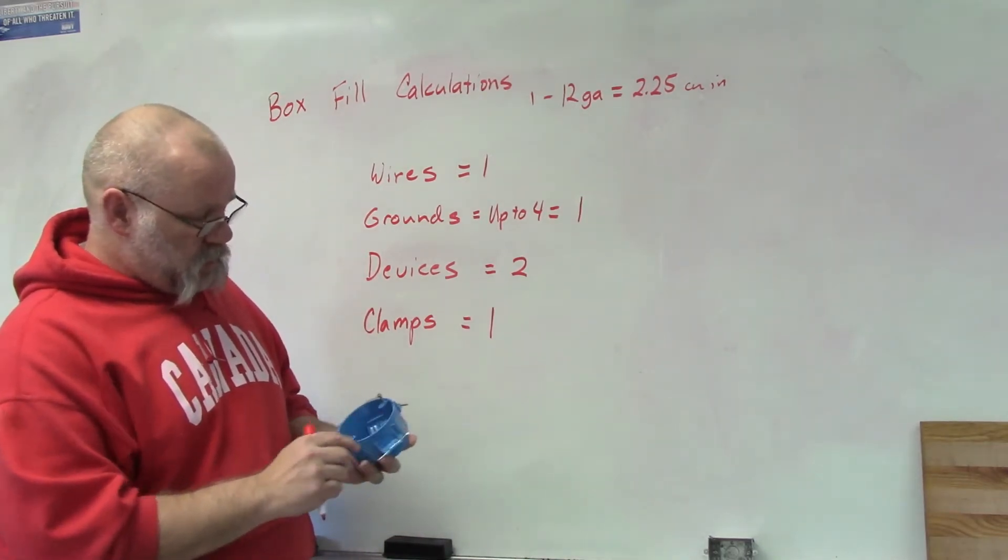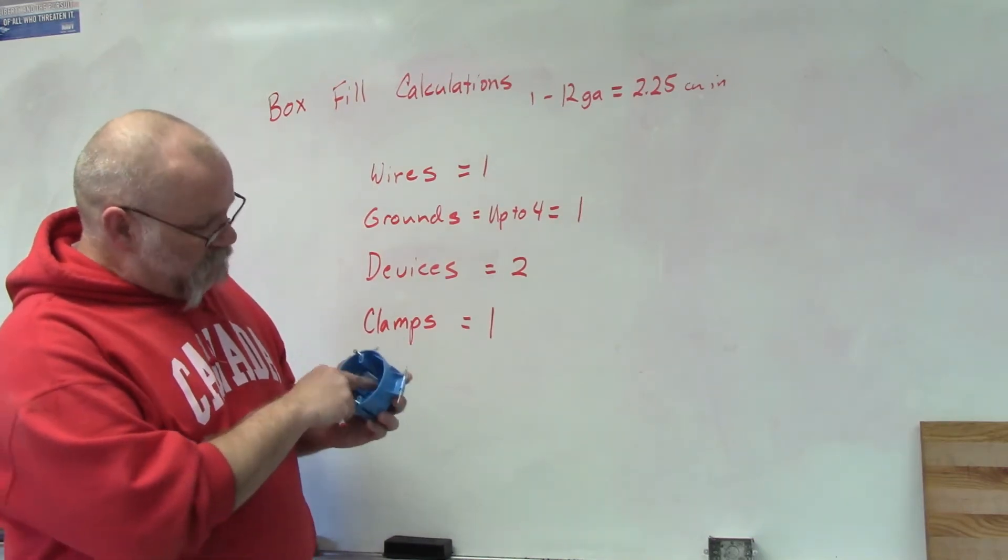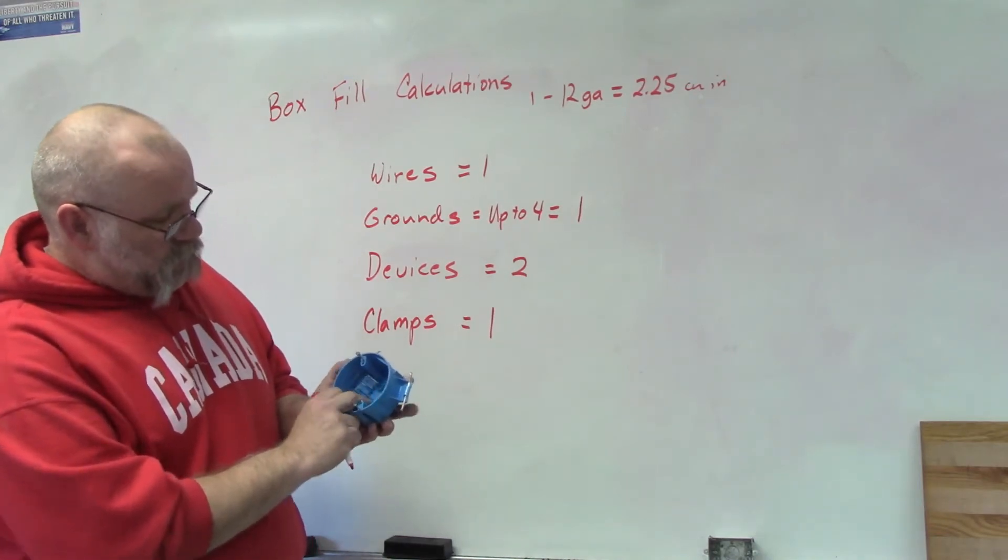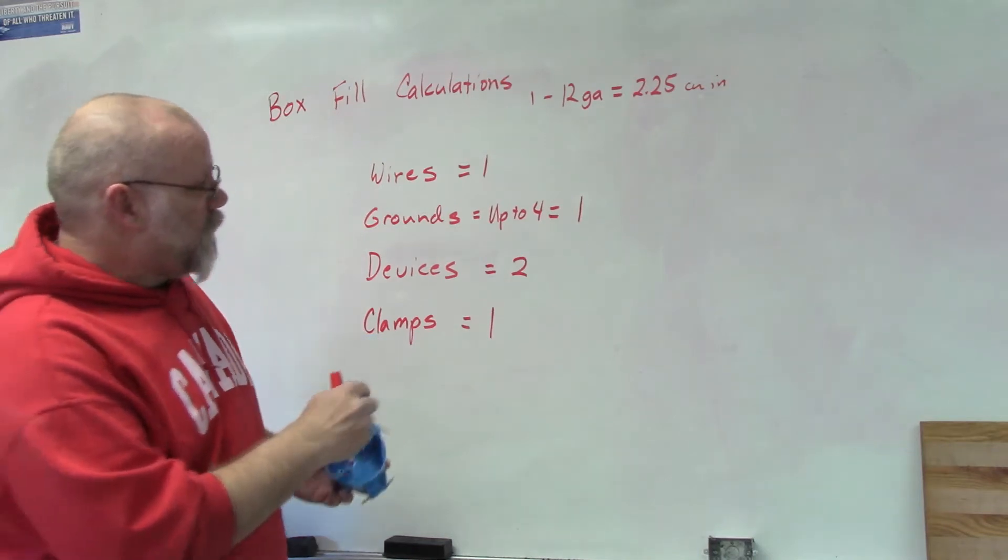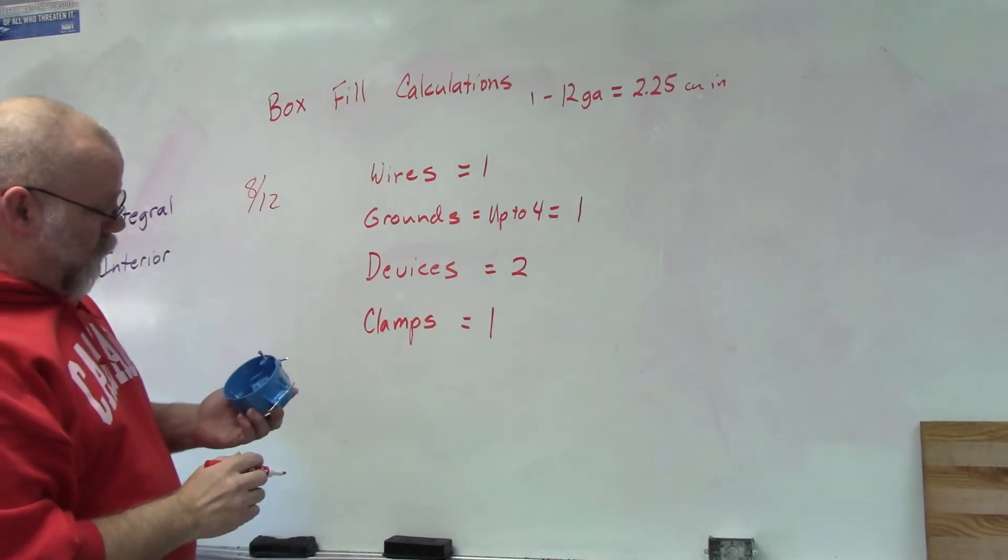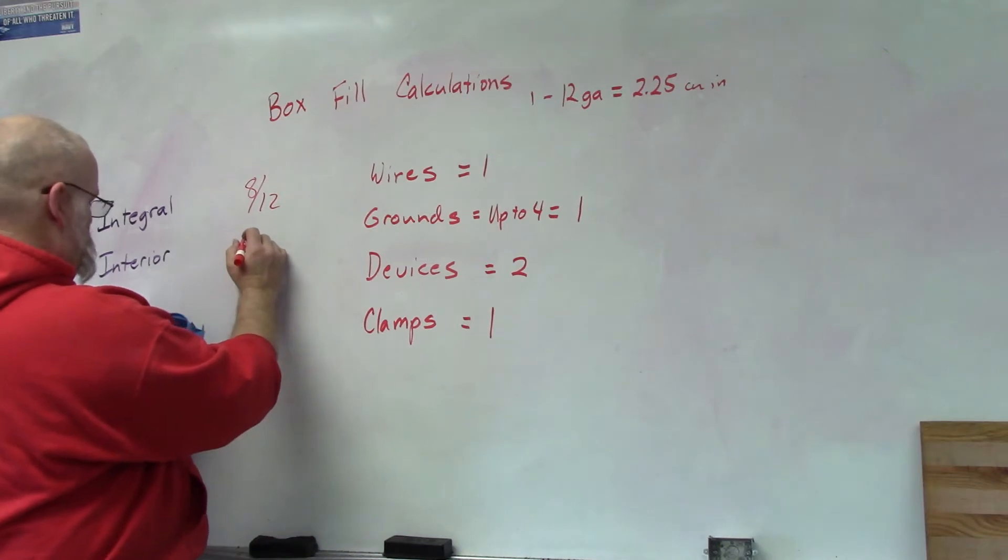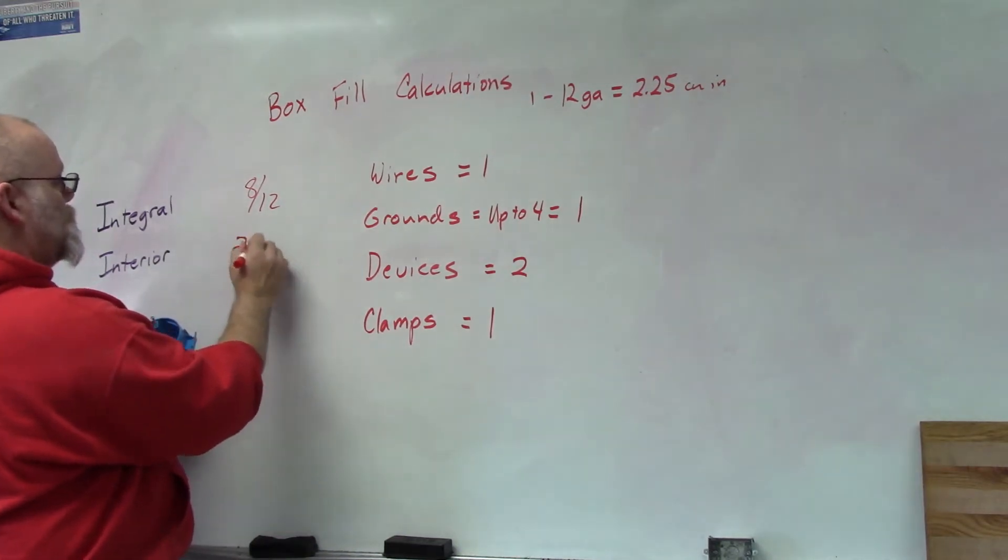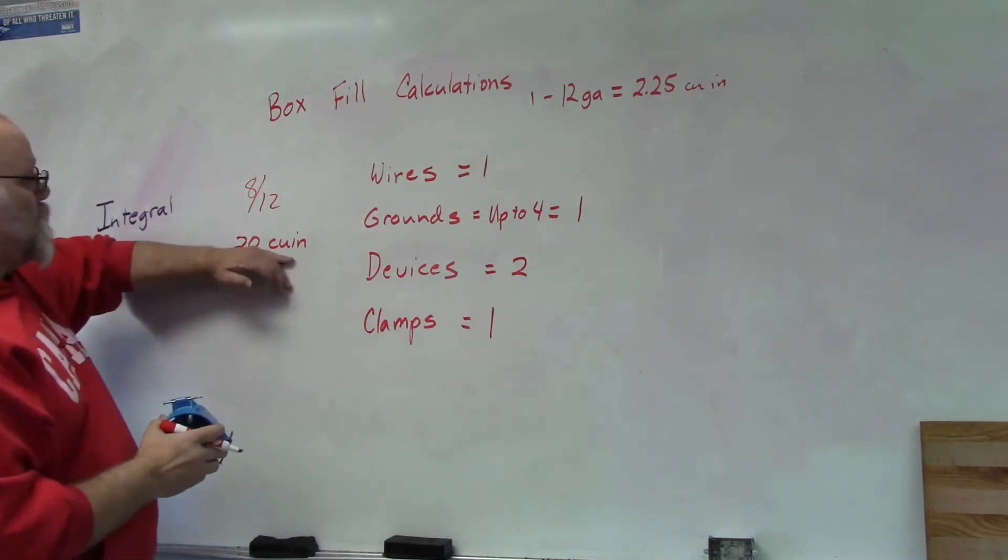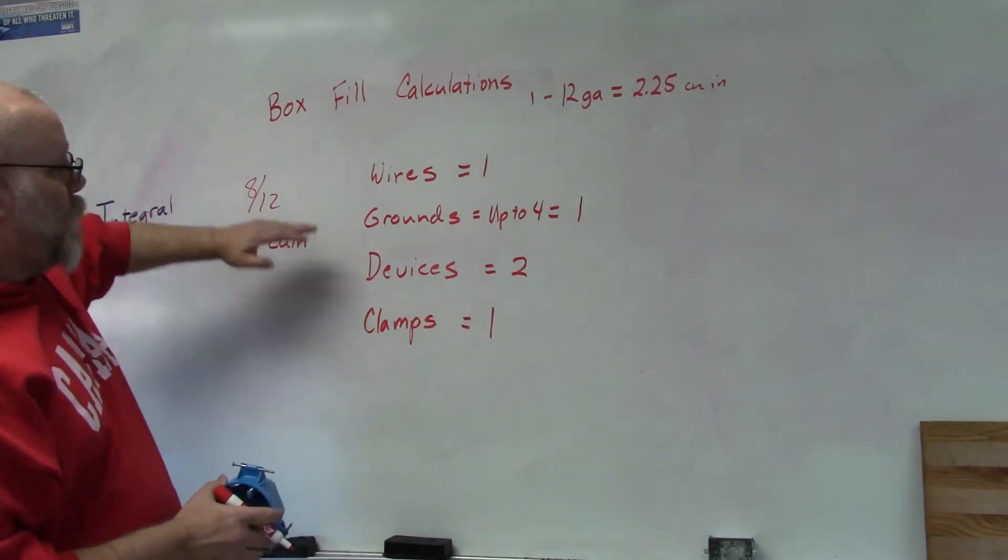Each box has two different ways of identifying it. If you look in the bottom of the plastic box, it says, for example, this round box can have eight twelves or the equivalent is 20 cubic inches. So it has 20 cubic inches of space or you can figure it using eight twelves.